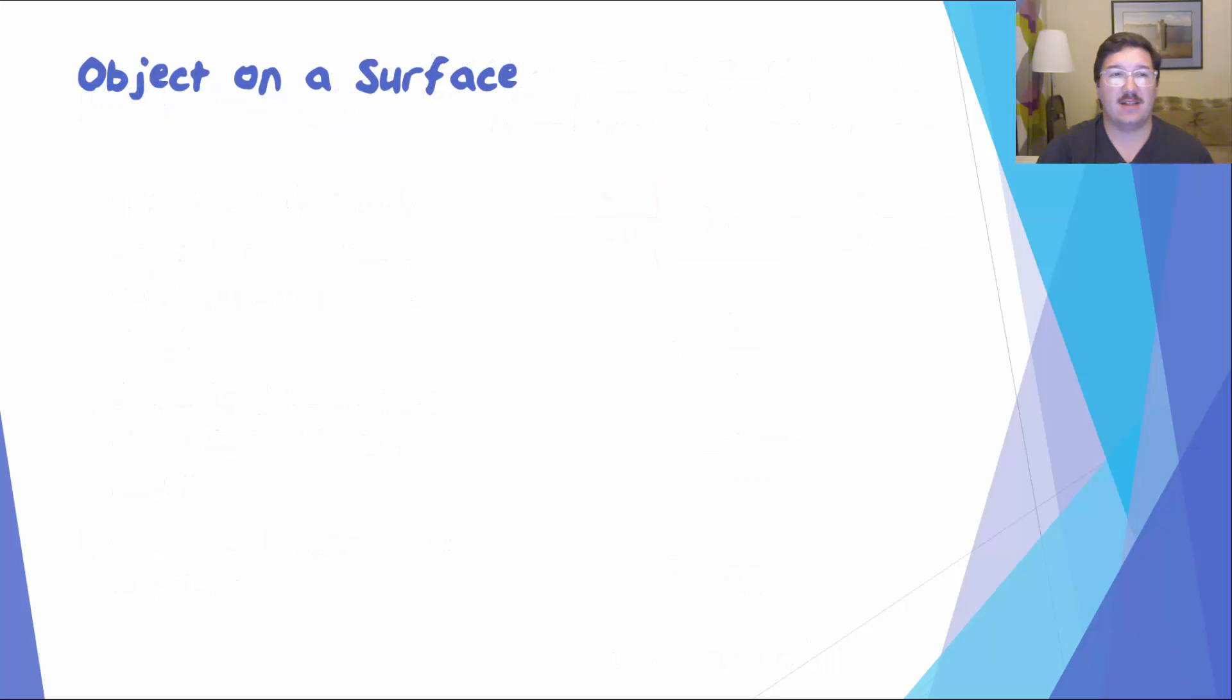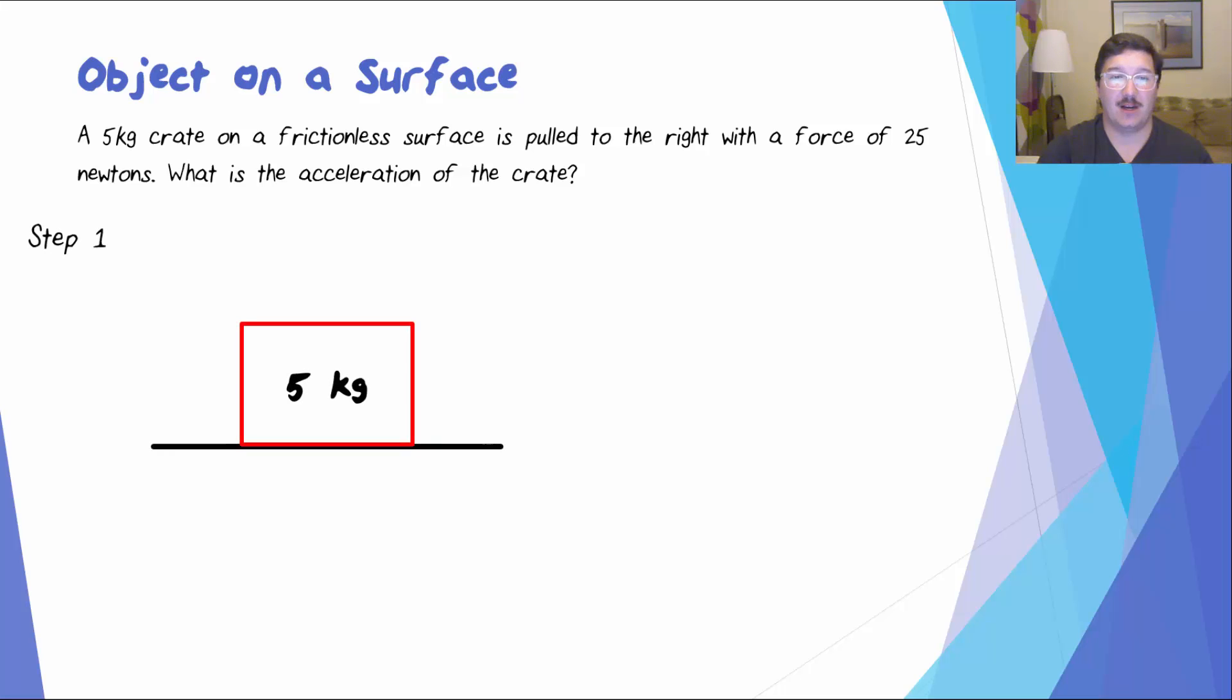Let's take a look at an example of an object on a surface. A 5 kilogram crate on a frictionless surface is pulled to the right with a force of 25 newtons. What is the acceleration of the crate? Well, step one, draw the object. In this case, it's on a surface, so we'll draw a line to represent that.